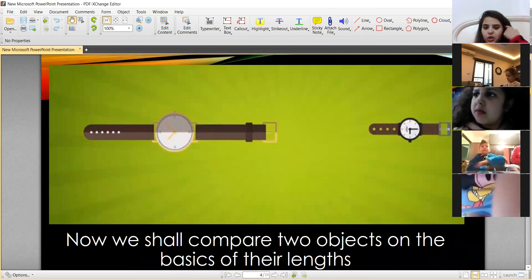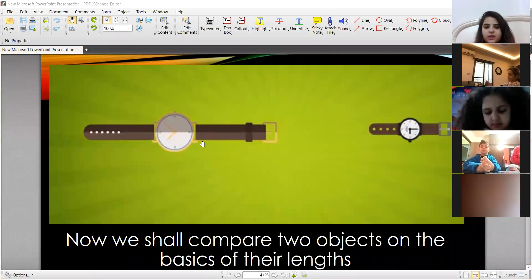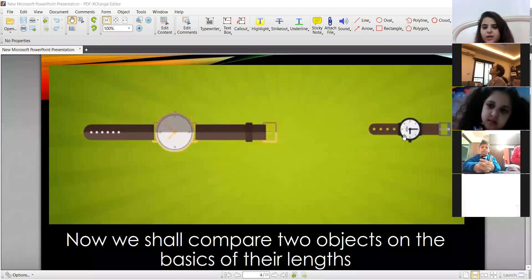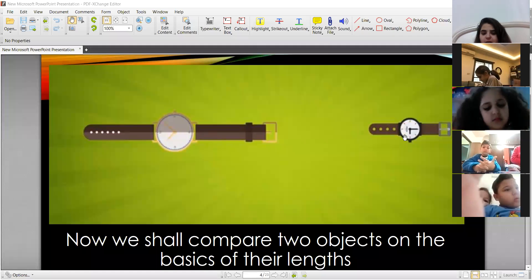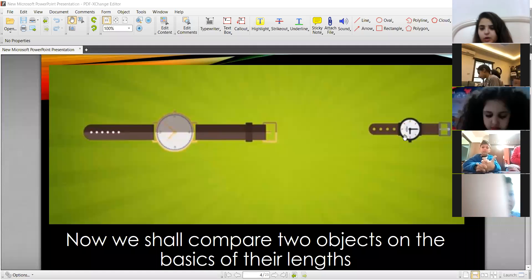Now we shall compare two objects. Okay. We have two objects. We have the first time and the second time. We need to compare between two objects. Any longer and shorter. Any longer and shorter.